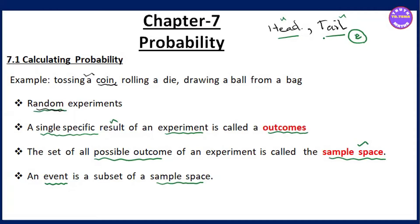In this case, we will look at the subset of the sample space. You can do all possible outcomes in your head. If you have any other outcomes, you can enumerate all possible outcomes.